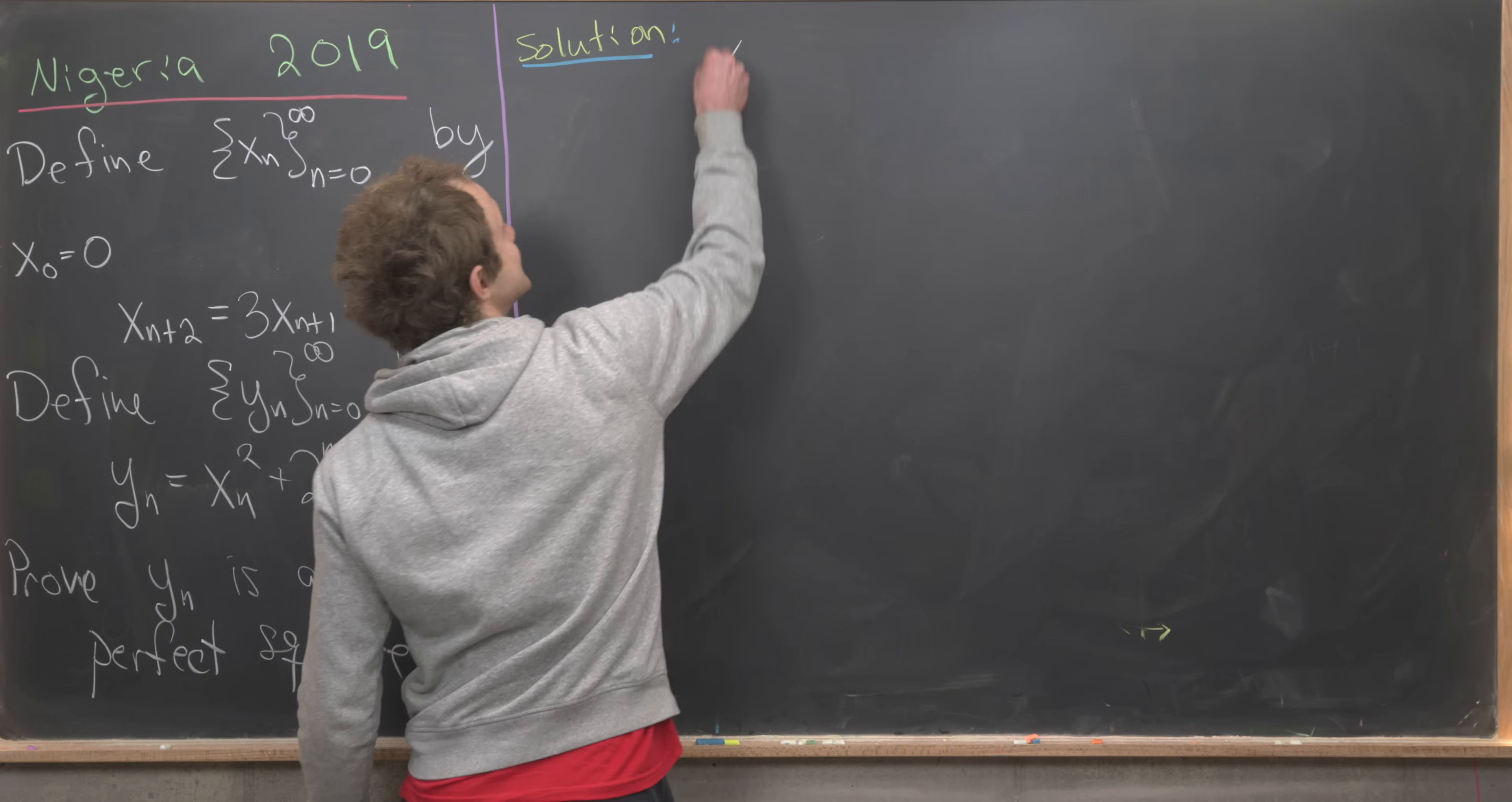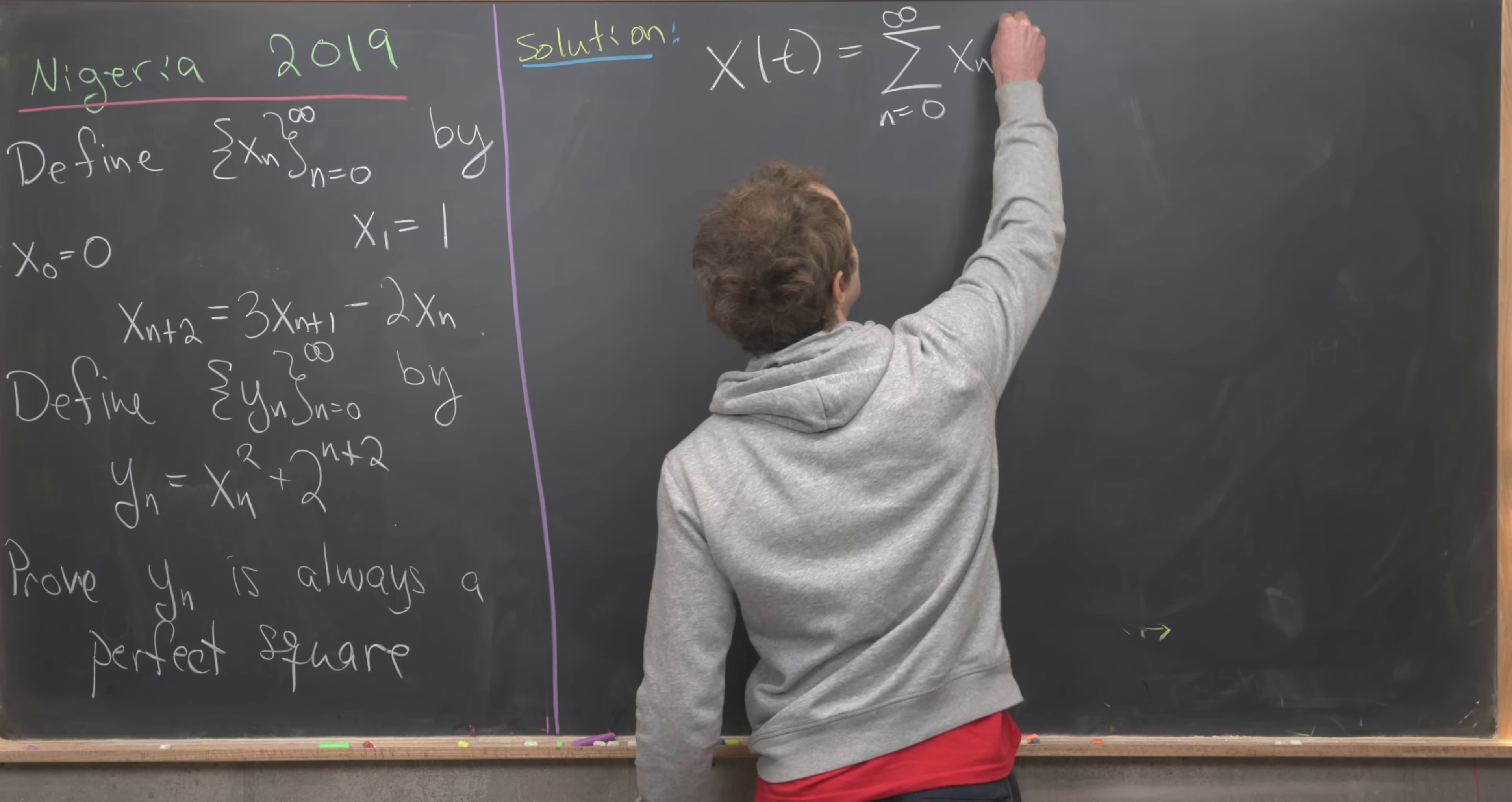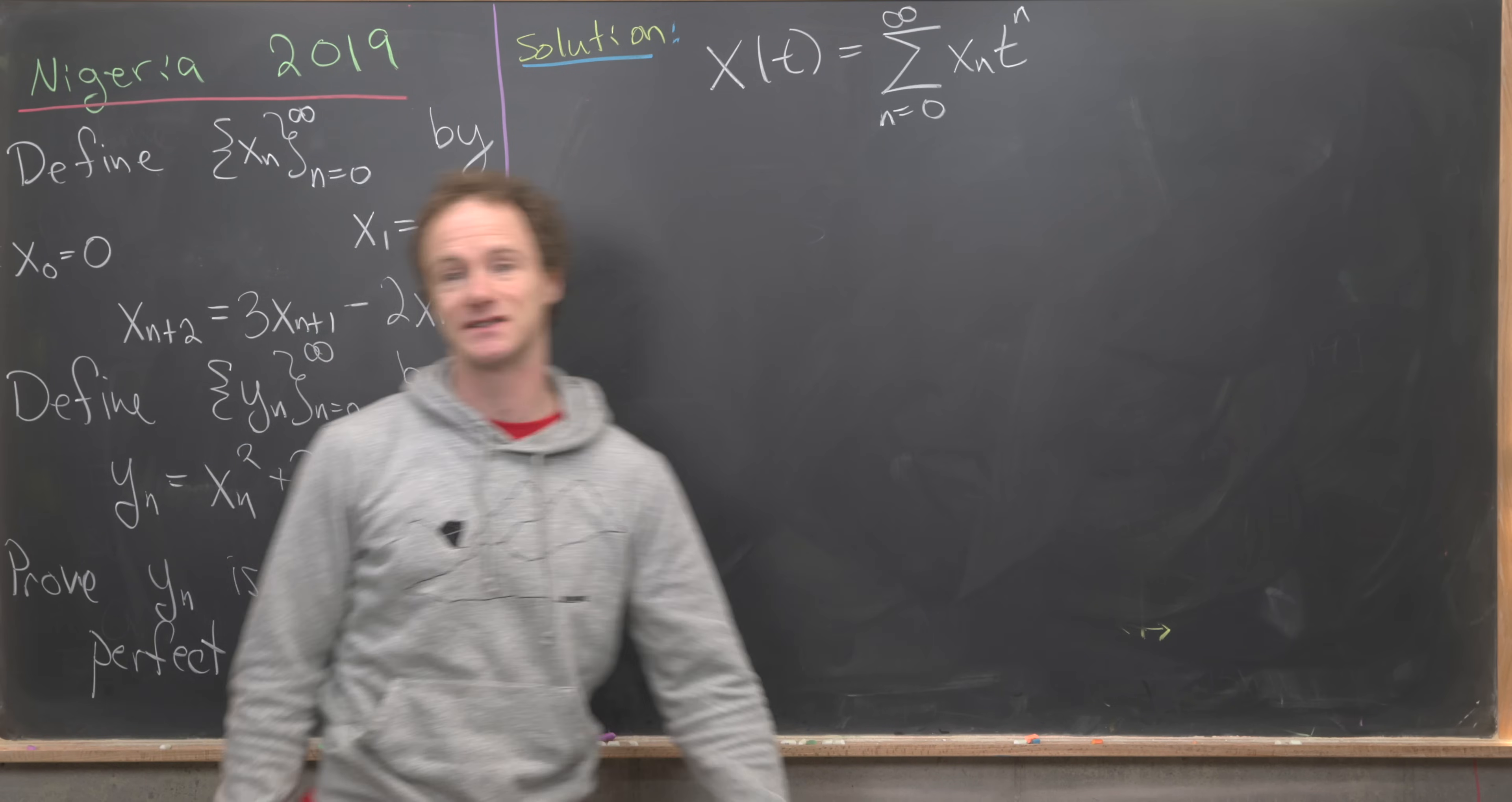Let's go ahead and set capital X of t equal to the sum as n goes from 0 up to infinity of x sub n t to the n. In other words, it's the generating function for our sequence x sub n.